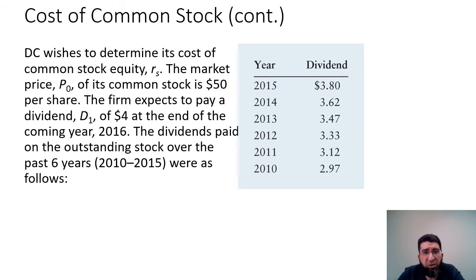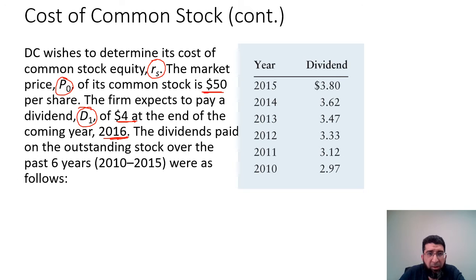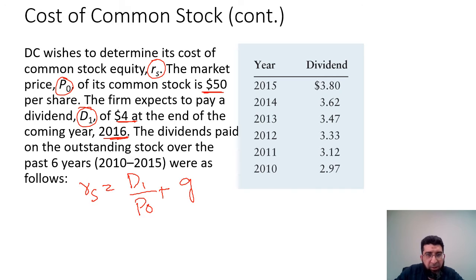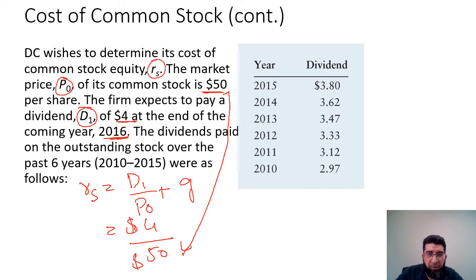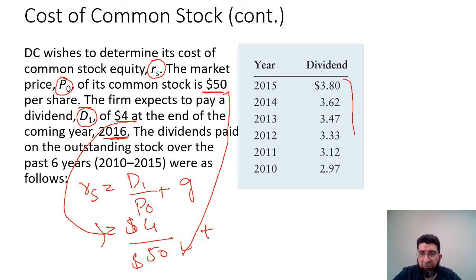Now let's do an example. DC needs to determine its cost of common stock equity RS. The market price P0 of its common stock is $50 per share. The firm expects to pay a dividend D1 of $4 at the end of the coming year 2016. Dividend payments over the past six years are provided. The formula is RS equals D1 over P0 plus G, so that's $4 divided by $50, plus the growth rate G.